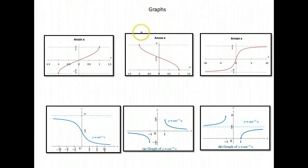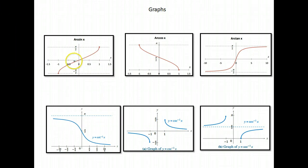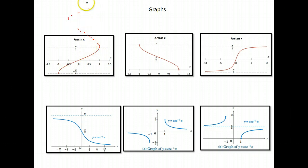Let's talk about inverse trig graphs. We've talked about the regular graphs of sine, cosine, tangent, cotangent, cosecant, and secant. If we do the inverse of those, a problem comes up because in order for something to be a function, the vertical line test must only cross through at one time. The inverse of the regular sine function repeats in a wave, and it's not a function because when x is 0.5, you have multiple y values.